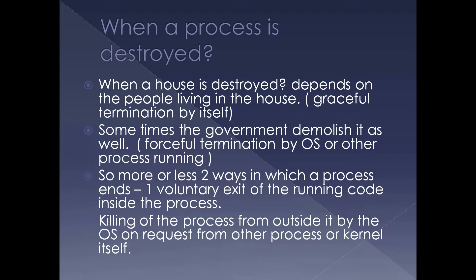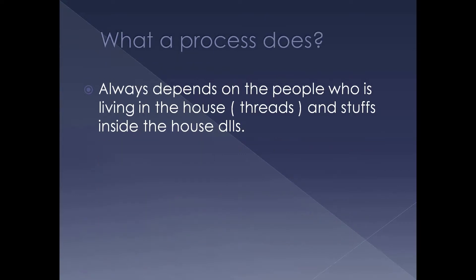When a process is destroyed, similar to a house being demolished, it can happen from the inside — the people living in the house decide they need to build a new one and demolish the old one. That is what we call graceful termination. Sometimes, however, an outside agent can come and terminate it as well — that is what we call forceful termination. So there are two ways a process exits: by itself, or from outside. Just like a house, a process doesn't do anything by itself; it depends on the threads inside and the loaded binaries.